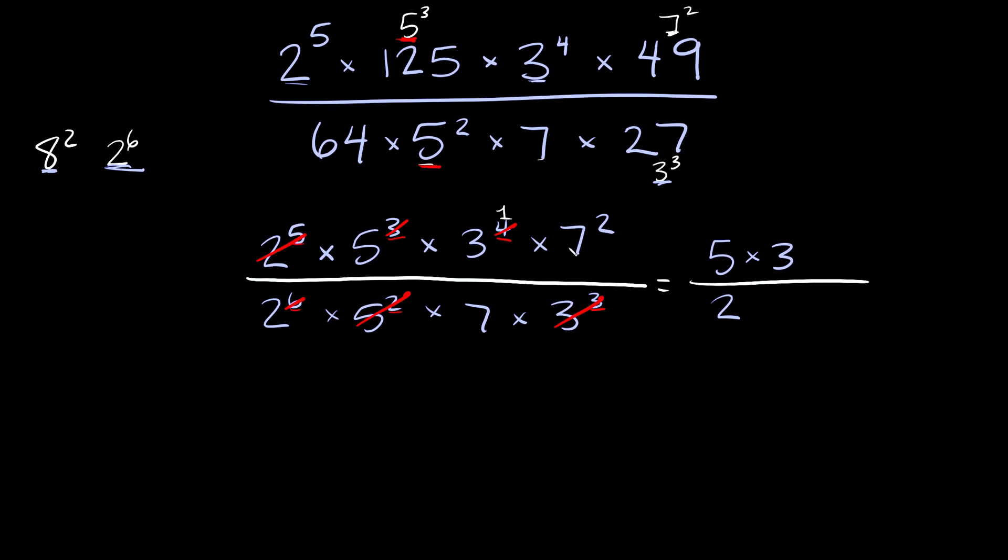Lastly we have these 7's. We have 2 7's on top and 1 7 on the bottom, so this single 7 on the bottom is gonna kill 1 of the 7's on top so we'll only be left with 1. 7 to the first is just 7, so here we'll just multiply by 7.